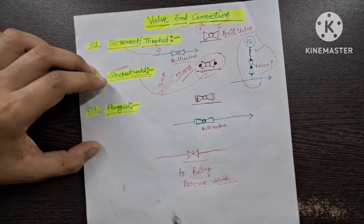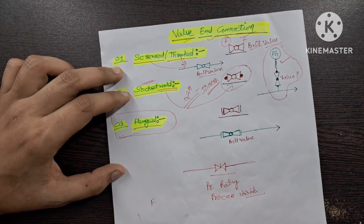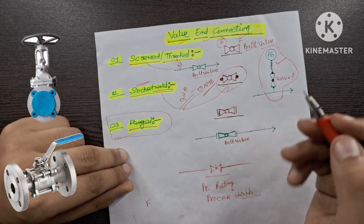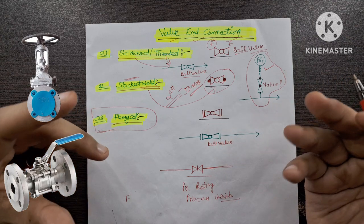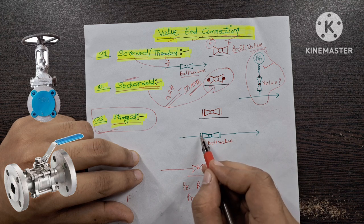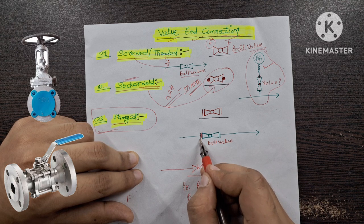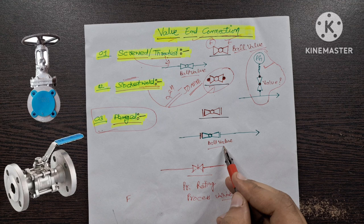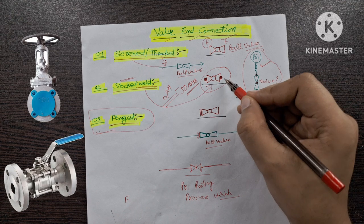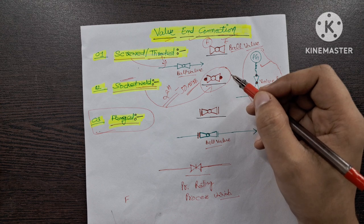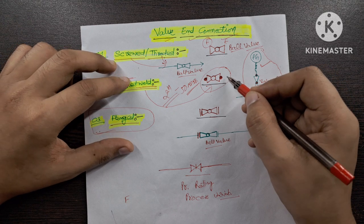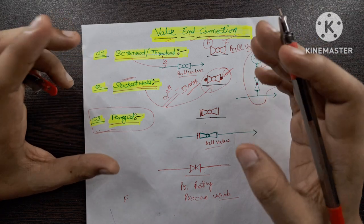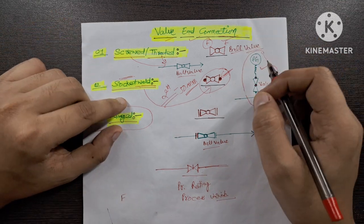The most commonly used end connection is the flanged type. Both sides — your pipeline as well as your valve — will have a flange, and then you connect both with nuts and bolts, as simple as that. These flanges connect together, but in this case the leakage chances are a little bit high. In the case of socket weld, the leakage chances are very, very rare. That's why in hydrogen lines and steam lines we use socket welded valves. These are the main types of end connection we see in industry.